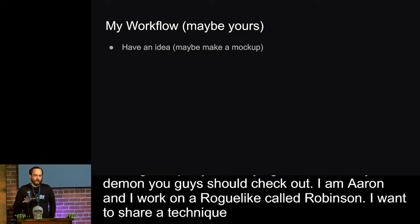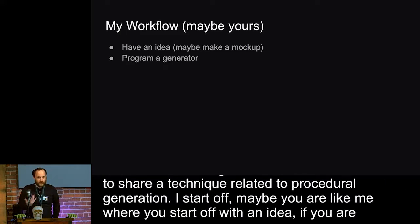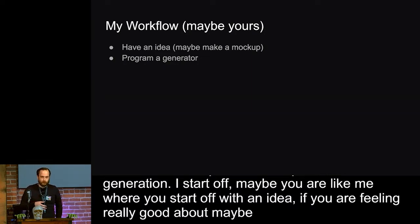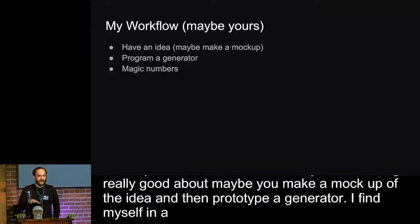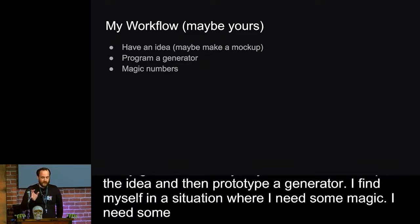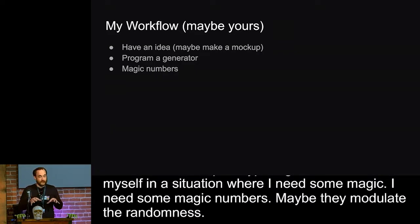So I start off, maybe you're like me, you start off with an idea. If you're feeling really good about it, maybe you make a mockup of that idea. And then you start prototyping out a generator. And I find myself in a position where I need some magic numbers. And maybe they modulate some of the randomness, it could be amplifying things, it could be a rate in which some random event is happening. But I need to figure out some magic number, and I put it in there, and the generator works. And it's going along, and then it breaks.